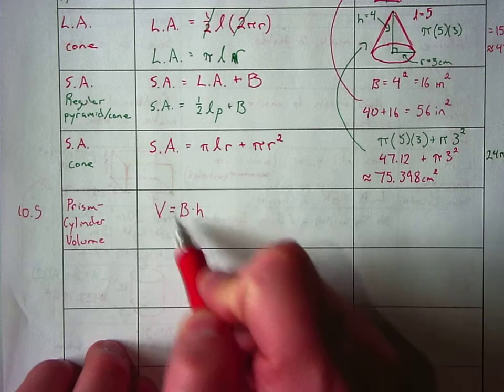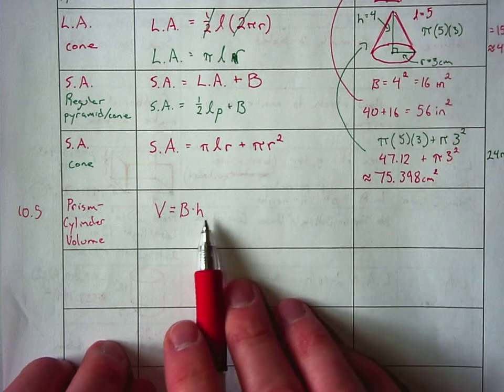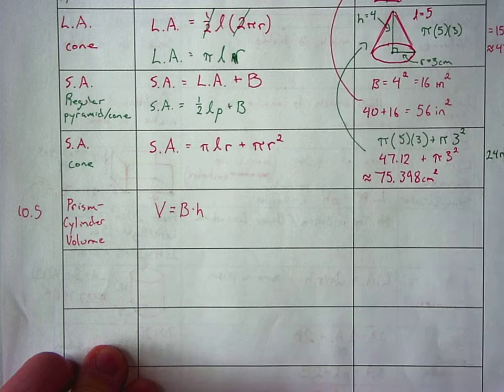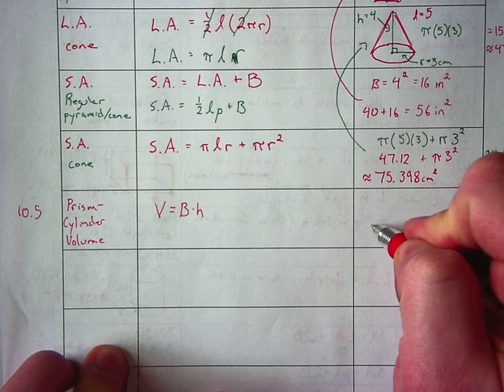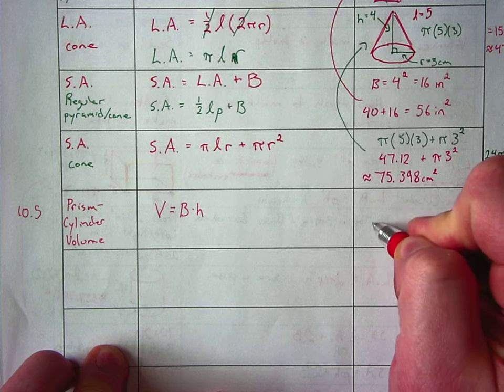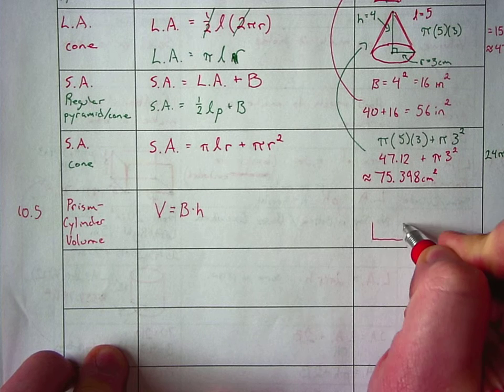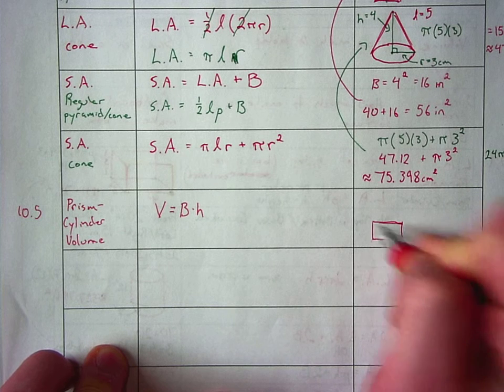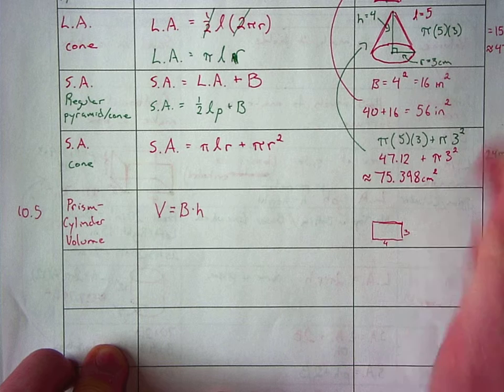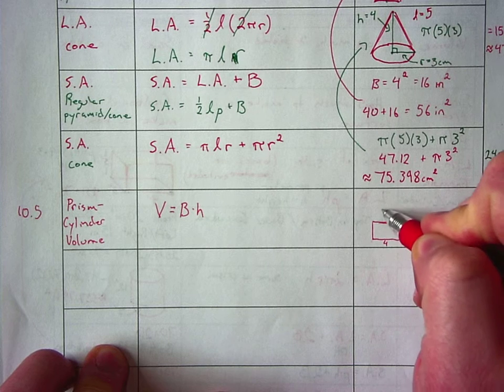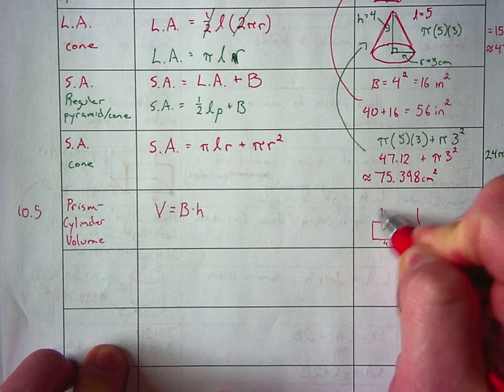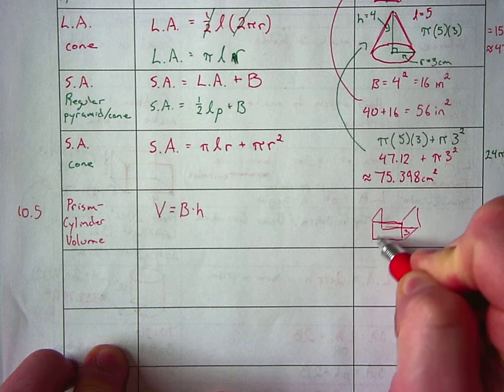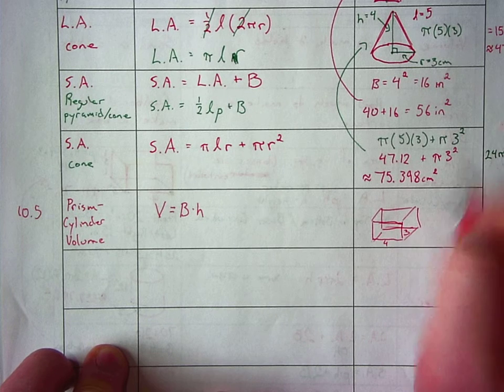And it kind of makes sense. If you have the area of the base one unit high and you stack it to that many height, that's where you're at. So, like, let's say you have those little kitty blocks. And your little kitty blocks, you're going to put down four blocks and three blocks, and you stack them five high.